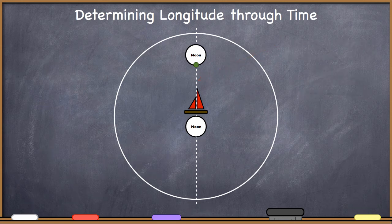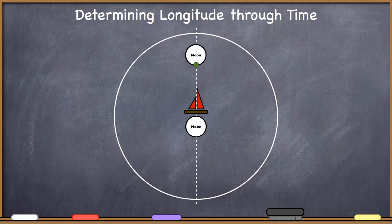Now remember what local noon or astronomical noon means? It means the point in time in which the sun is highest in the sky. When the sun is highest in the sky for you, it is your astronomical noon. So on this prime meridian it is noon, and we have a sailing ship here also on that same line of longitude.